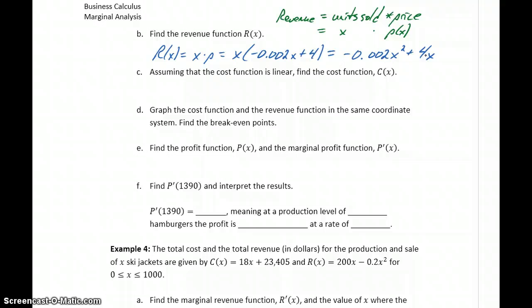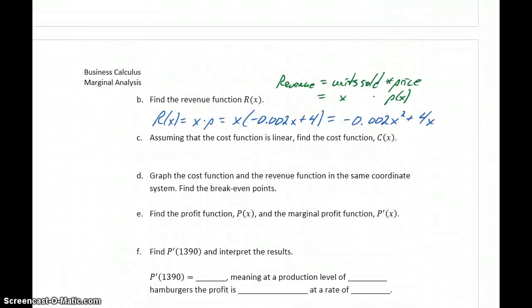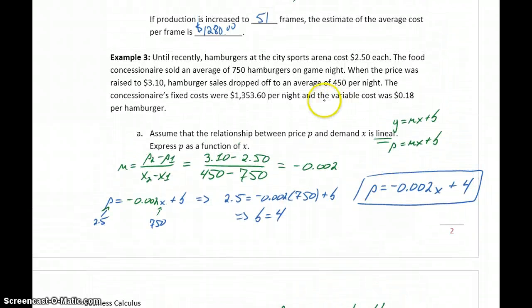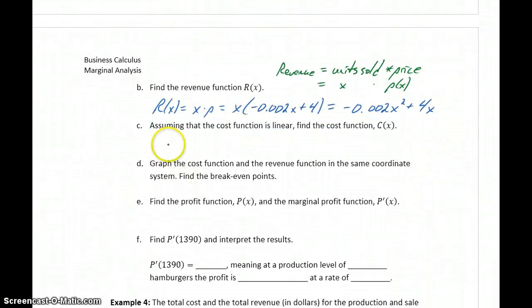In part C, assuming that the cost function is linear, we want to find a cost function. So the other information in this problem that we haven't used yet is in this last sentence. The fixed costs were $1,353.60. The variable cost was $0.18 per hamburger. So that's going to give us a cost function of $1,353.60 plus 0.18X, just translating the fixed cost and the variable cost into that linear function.